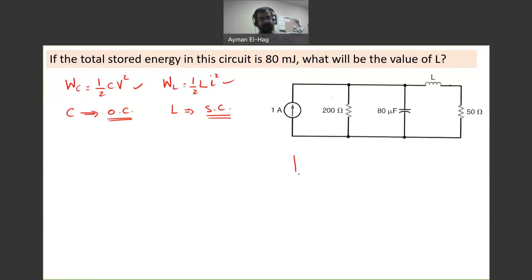Let me draw the circuit now. The current source, nothing will happen to it, it's one amp. Then the resistance stays as it is. Then here we have the capacitor. The capacitor will be an open circuit and I will call it VC for voltage across the capacitor. Now the inductor will be a short circuit and I will have IL.